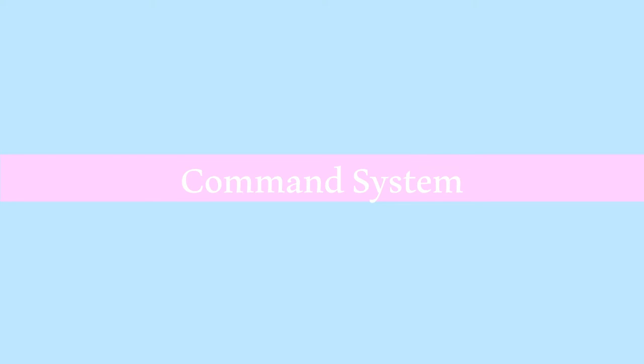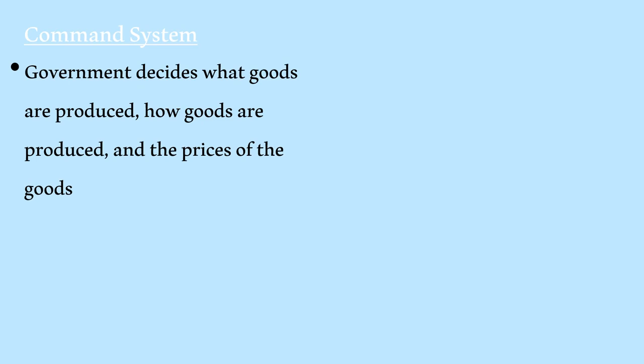And for our last economic system, here's the command system. The government decides what to produce, how to produce it, and who to produce it for. This means citizens don't have much freedom in what they're buying or what they're producing. The government mostly focuses on certain quotas to be fulfilled by government-run businesses. This limits civilian freedom severely.